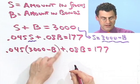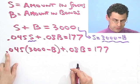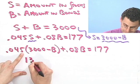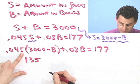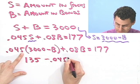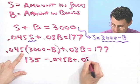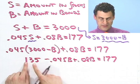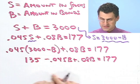Now if I distribute this, what is 3,000 times 0.045? Well, that's 135. And then here I have minus 0.045 B plus 0.08 B, and that equals 177. So if I bring this 135 to this side, I would see 42.